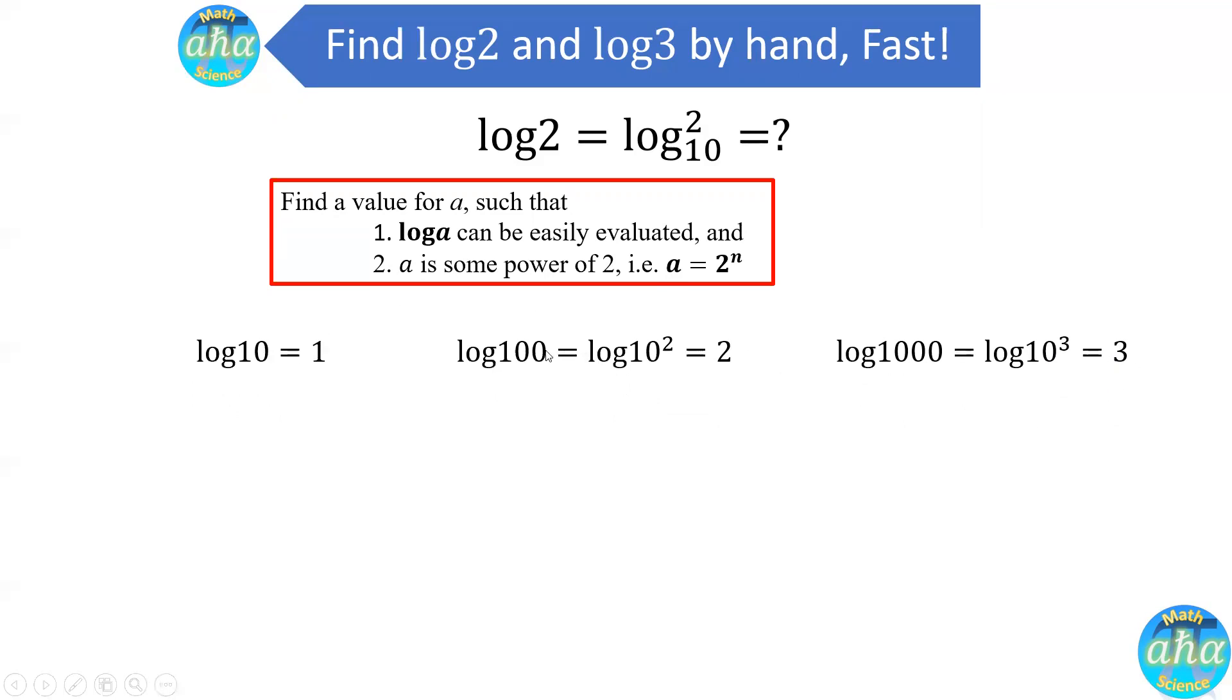And none of these numbers 10, 100, or 1,000 are powers of 2. So let's take a look at powers of 2. 2 to the 1 is 2, 2 to the 2 is 4, 2 to the 3 is 8, and 2 to the 4 is 16, and 2 to the power 5 is 32. So among these numbers, it looks like the number 8 is very close to 10. However, the difference is still about exactly 20 percent.